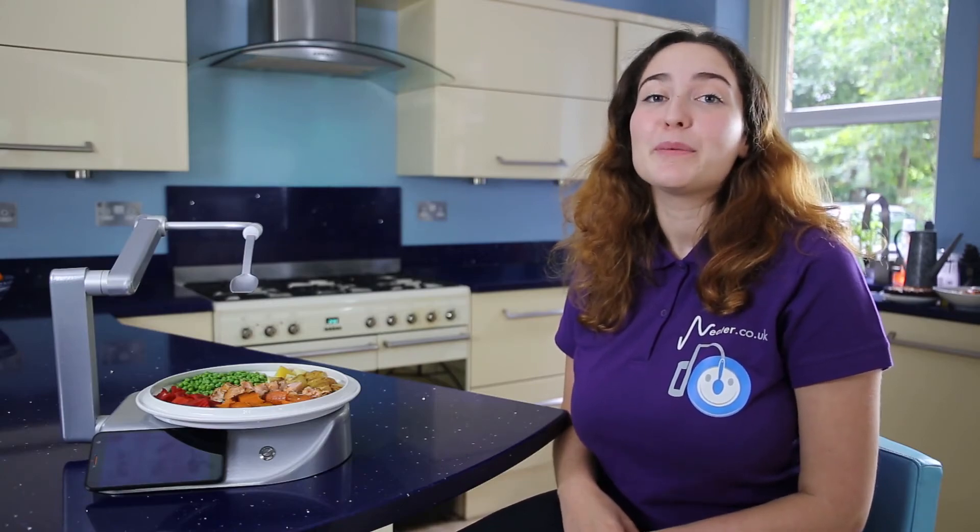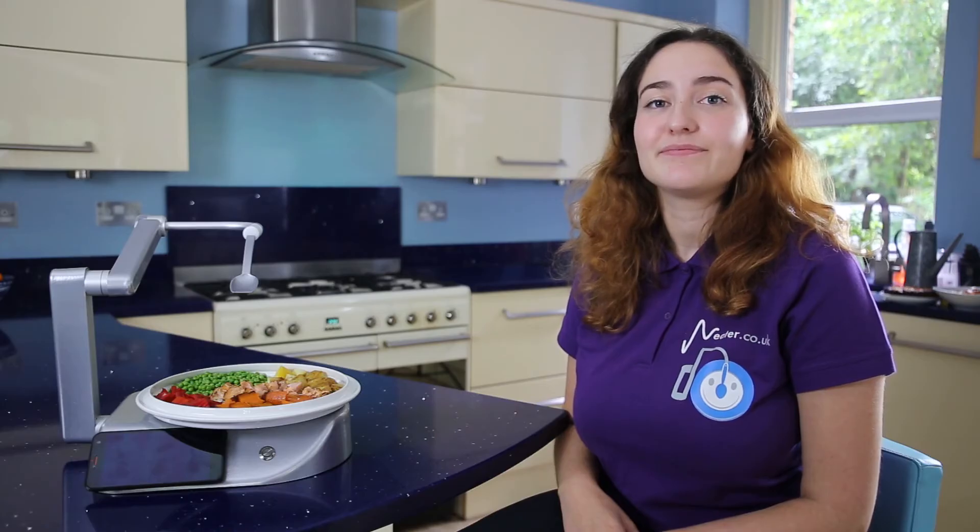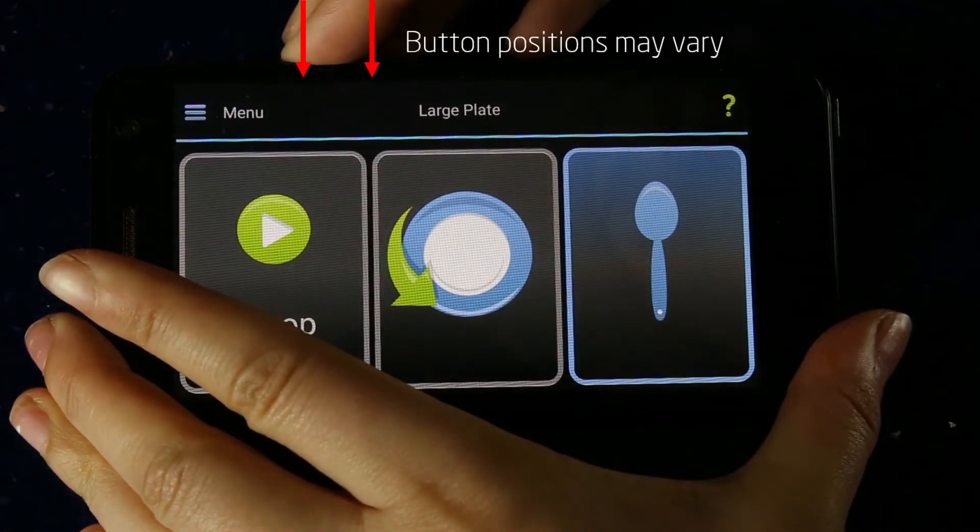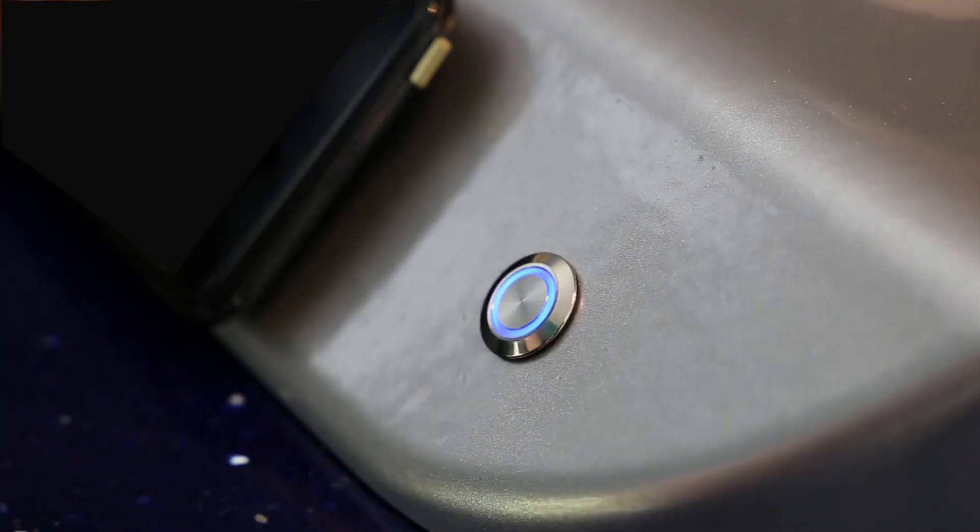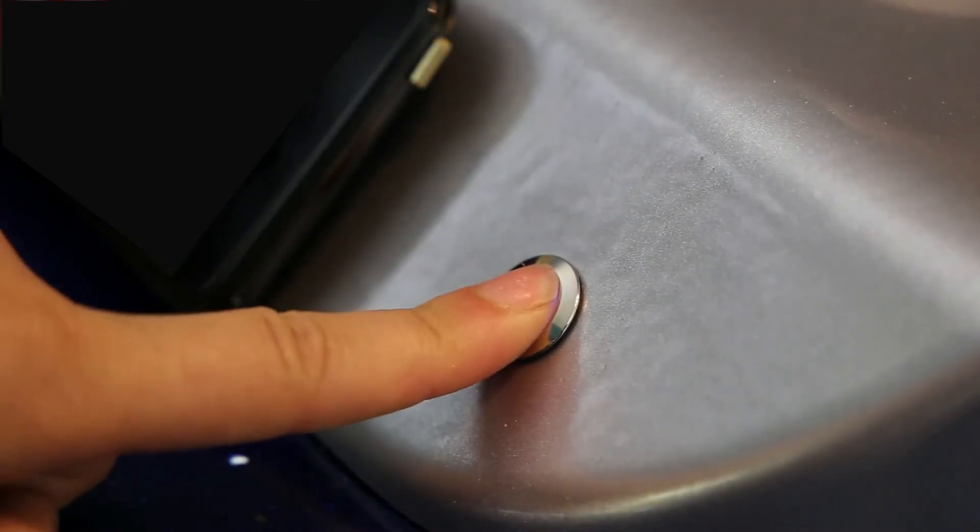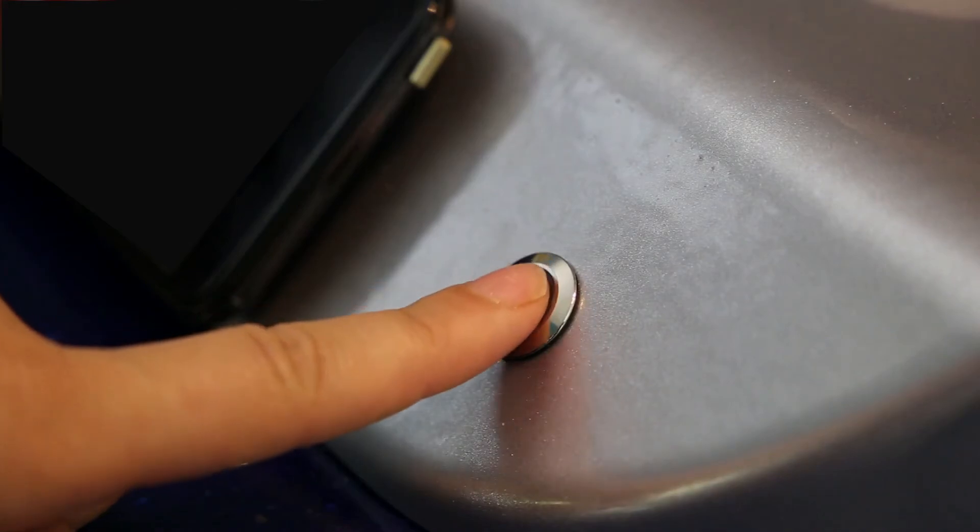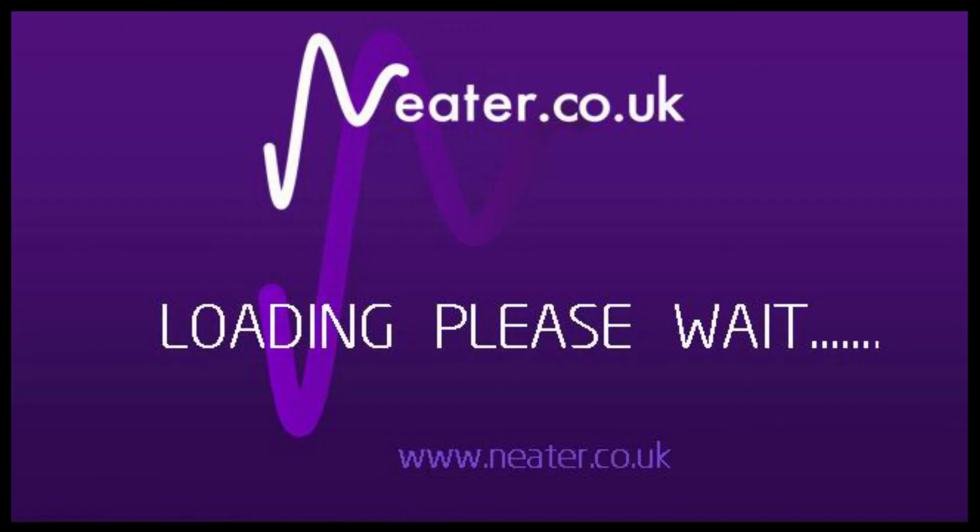Don't worry if you have a problem. Most things can be solved by turning your Neater Eater off and on again. Fully restart the tablet by pressing and holding the power and volume up buttons together until the tablet vibrates. Meanwhile, turn off the robot by pressing and holding the power button until the light goes out. This could take 15 seconds. Then let go and press it again for the light to come on. Then wait for 2 minutes to give your Neater Eater a chance to wake up.